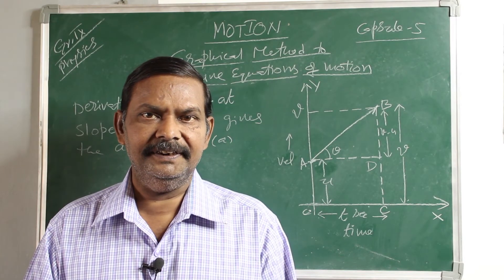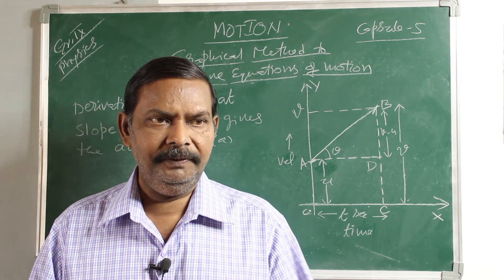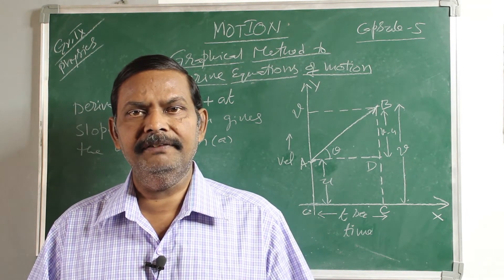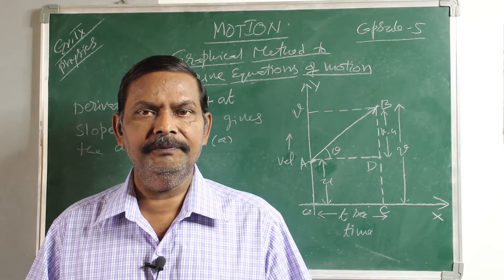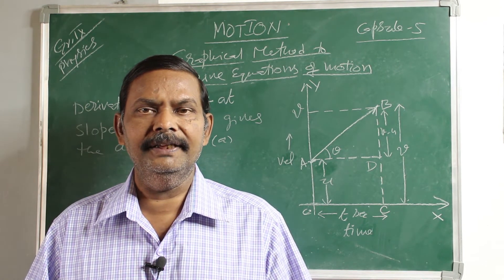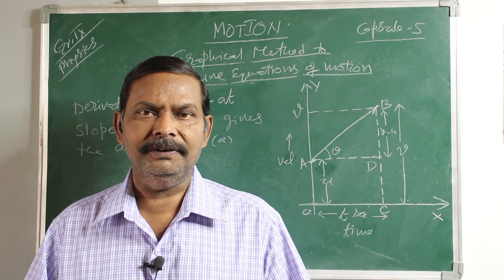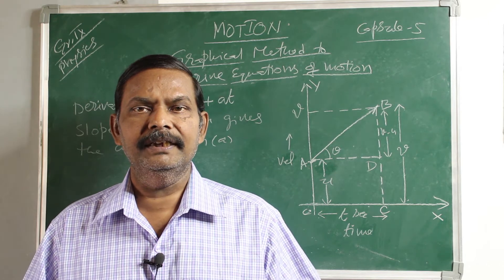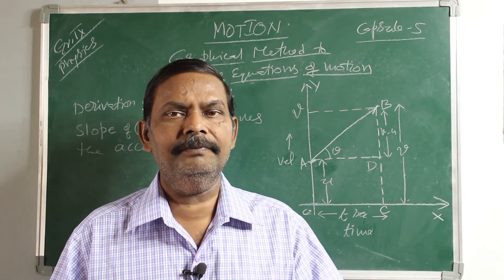Hi there, this is DMR and welcome to DMR tutorials. In the previous capsule, we discussed the derivation of the equations of motion: V = U + AT, S = Ut + ½AT², and V² - U² in the algebraic method. Now in this capsule, we will discuss the derivation of the same equations using graphs, particularly the velocity-time graph.